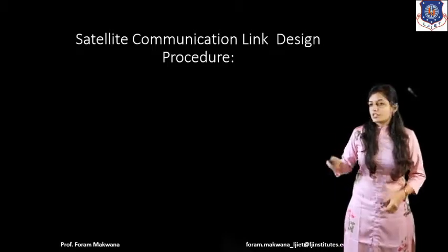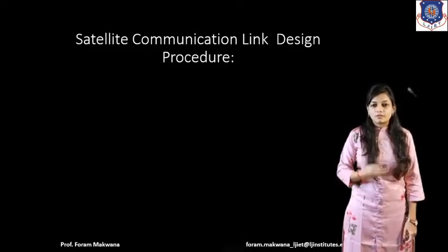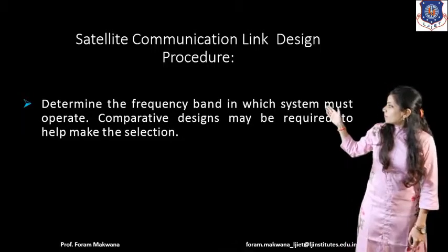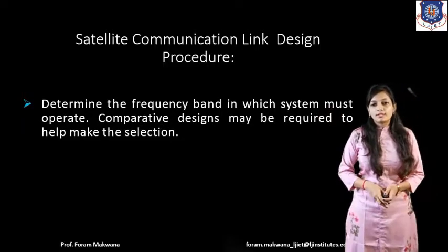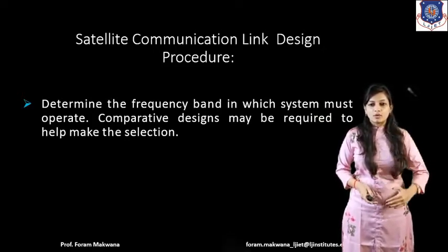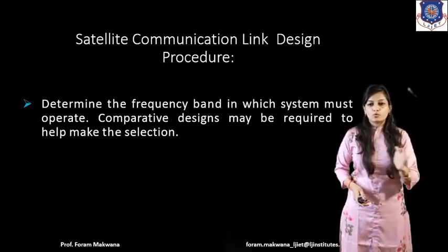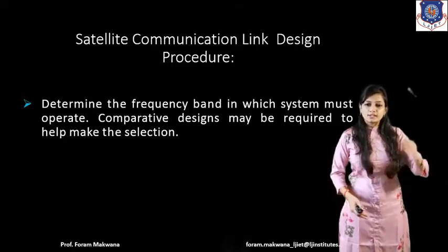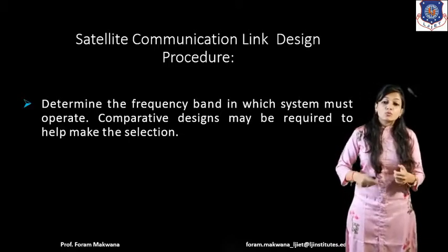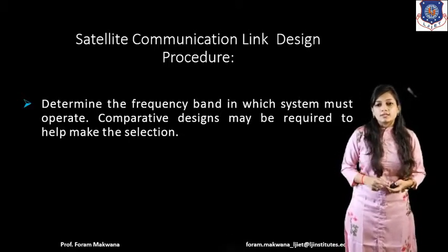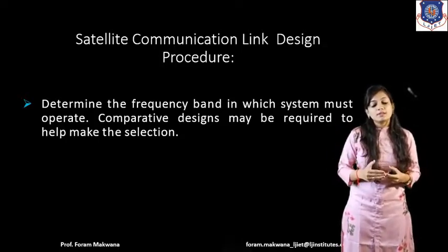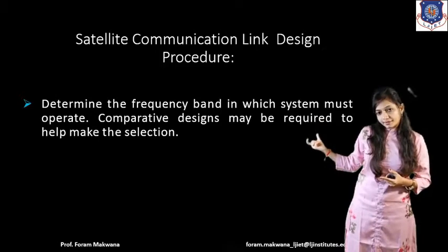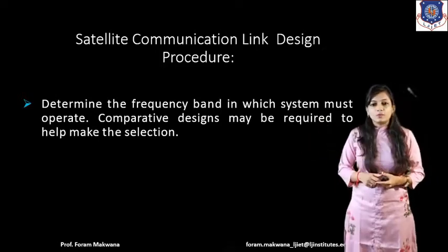Now, the standard communication link design procedure. The different steps to follow are: First, determine the frequency band. There are different microwave bands — L, S, C, X, K, Ka, Ku — ranging from 1–2 GHz, 2–4 GHz, 4–8 GHz, 8–12 GHz, 12–18 GHz, 18–26 GHz respectively. The choice of frequency band matters because at higher frequencies the propagation effects can impact the overall carrier power.